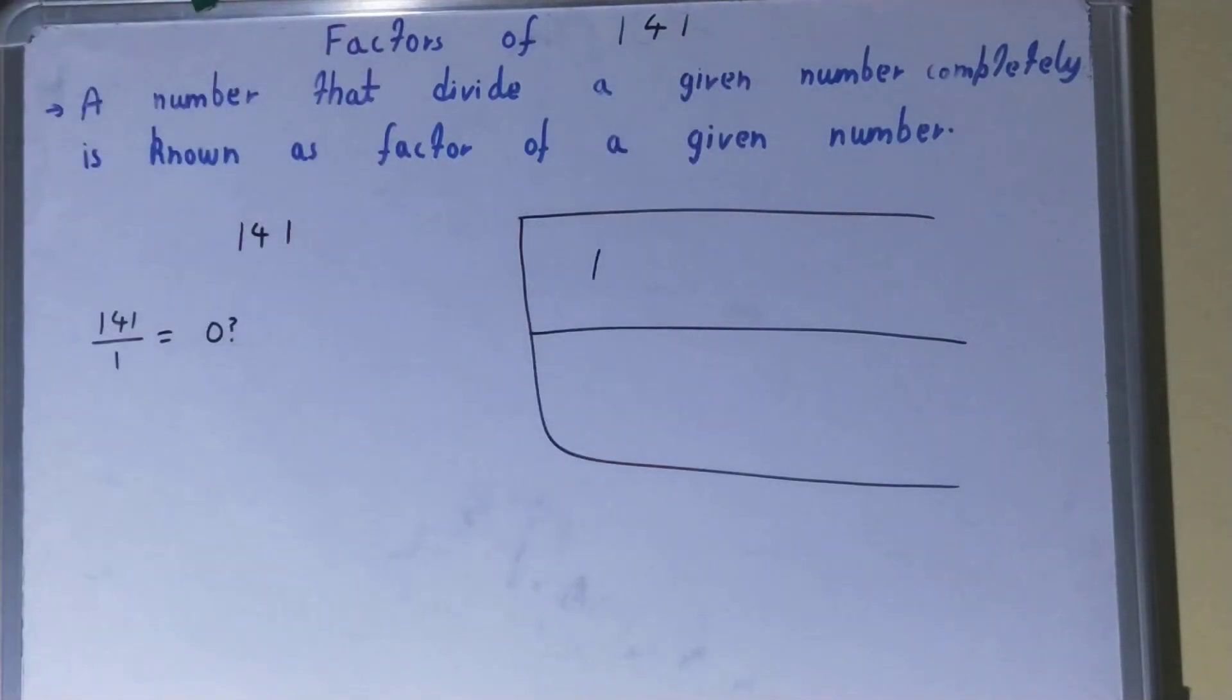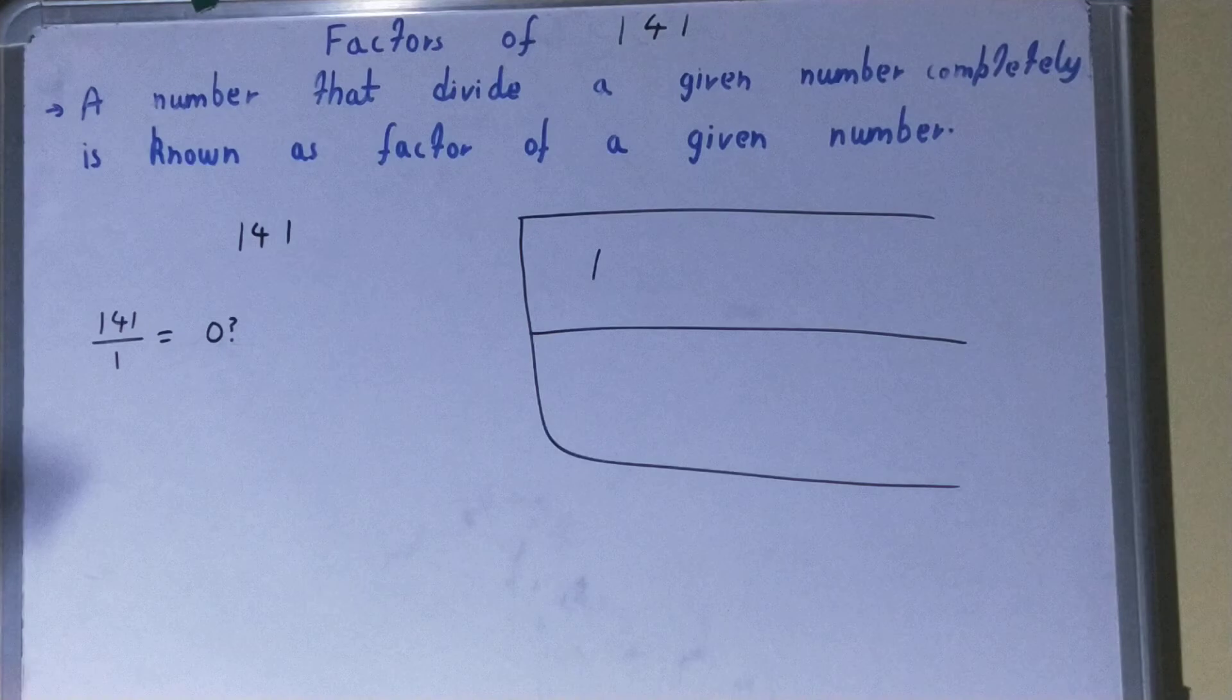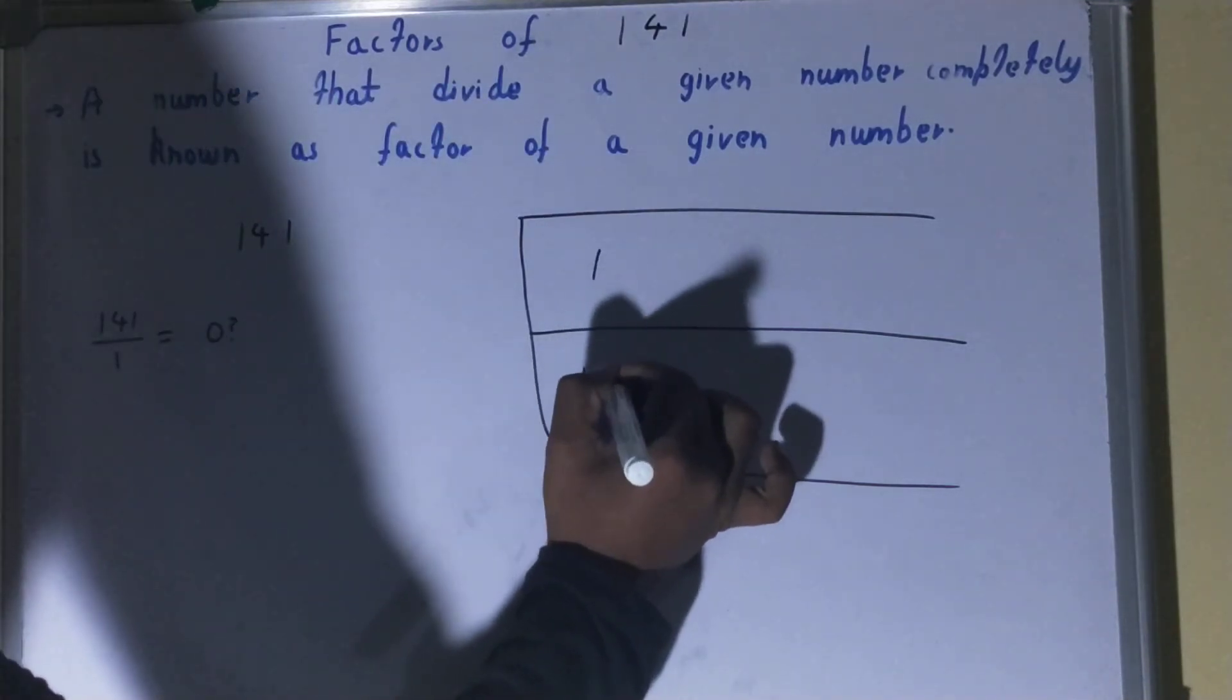So 1 I will write it over here in the factor list of 141. And with the help of this 1, we can also determine another factor for 141. How? 1 into what times is 141? 1 into 141 times. 141 will also be the factor automatically.